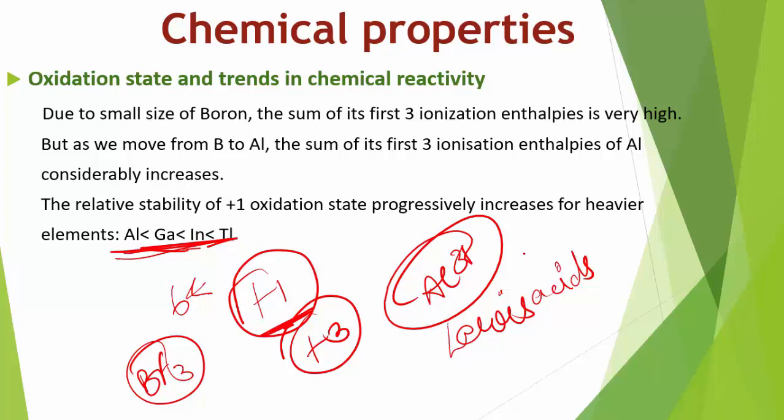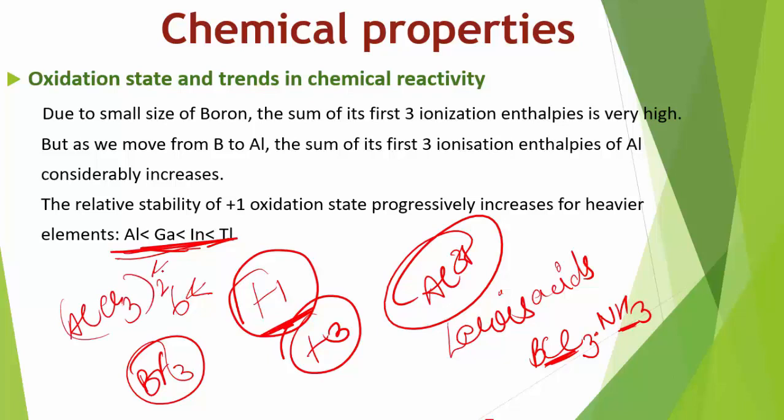The tendency to behave as Lewis acids decreases with increasing size down the group. BCl₃ easily accepts a lone pair from ammonia to form BCl₃·NH₃. AlCl₃ dimerizes to form Al₂Cl₆ through halogen bridging to achieve a stable configuration.